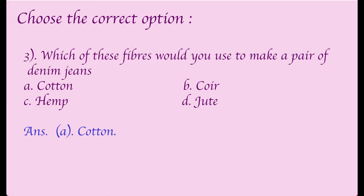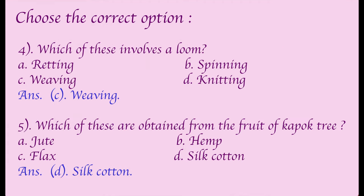Third: Which fiber would you use to make denim jeans? Answer: A - Cotton. Fourth: Which of these involves a loom? Answer: Weaving. Fifth: Which of these are obtained from the fruit of kapok trees? Answer: Silk cotton.